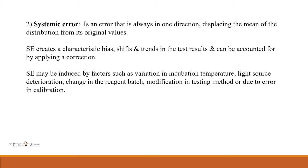Systematic error is an error that is always in one direction, displacing the mean of the distribution from its original value. Systematic error creates a characteristic bias — shifts and trends in test results — and can be accounted for by applying a correction. Systematic error may be induced by factors such as variation in incubation temperature, light source deterioration, change in reagent batch, modification in testing method, or error in calibration.